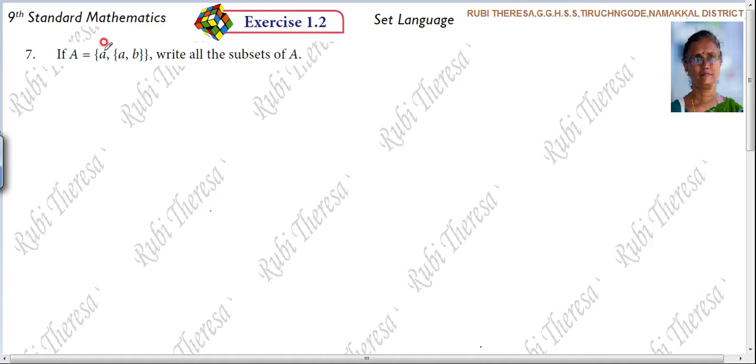One element is A. This A, B, you see they have given in curly braces. Isn't it? This is considered to be one element. So this is one, this is one. So how many elements are there? Two elements are there.